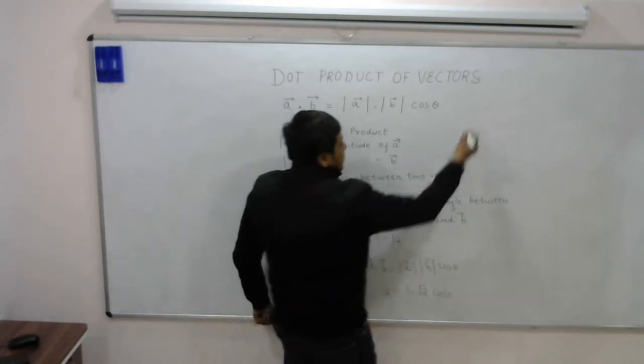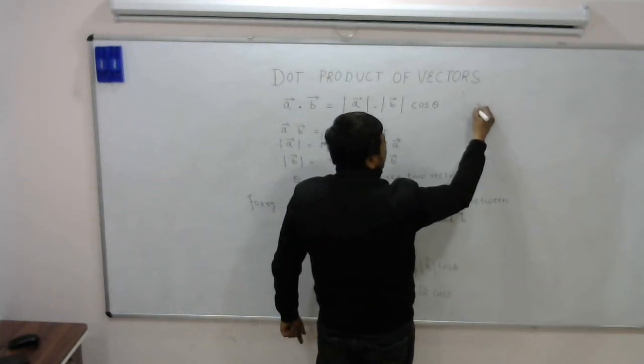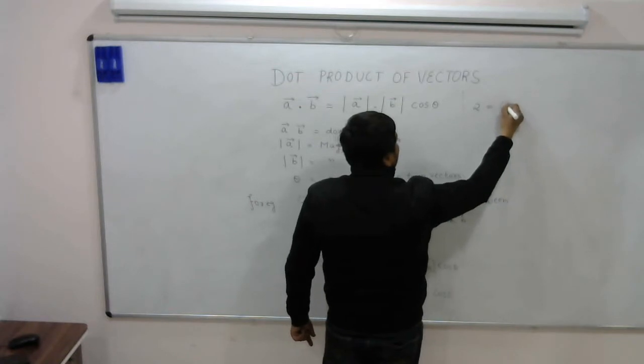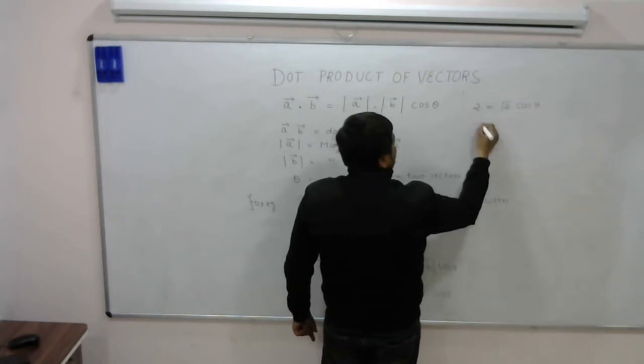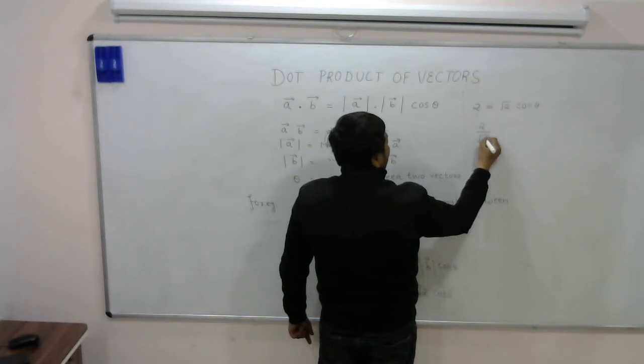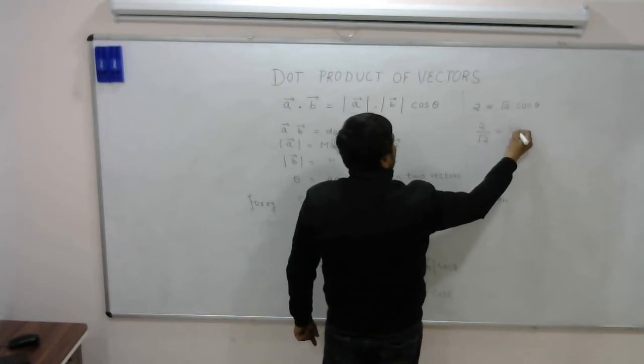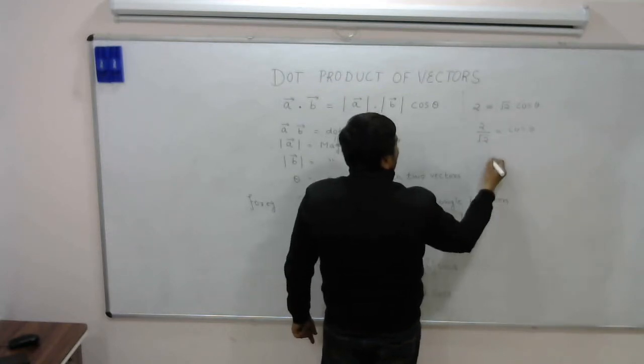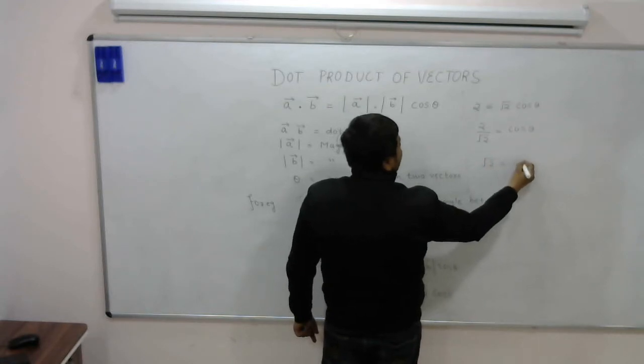That means 2 equals root 2 cos theta. So 2 upon root 2 equals cos theta, which gives us root 2 equals cos theta.